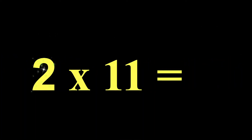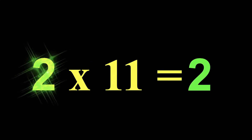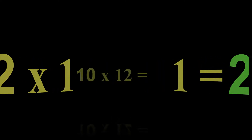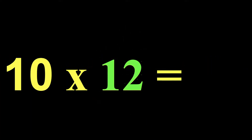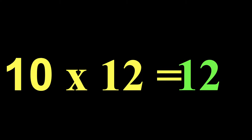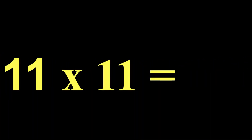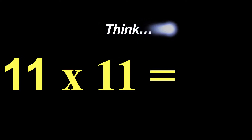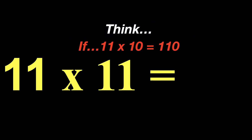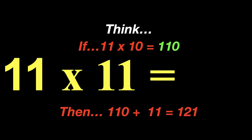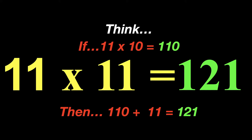2 times 11 is our 11 rule — we're going to double the 2. So 2 times 11 is 22. 10 times 12 is going to use the 10 rule — we take the 12 and add a 0, so our answer is 120. 11 times 11 — can we use the 11 rule? No, we said it only goes up to 9. However, think of it this way: 11 times 10 would be 110, and if we take 110 and add one more group of 11, that would be 121. So 11 times 11 is 121.